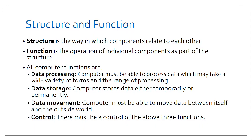All computer functions either perform data processing, control signals or instructions, help in data movement, or perform data storage functionality. A computer must be able to process data which may take a wide variety of forms. We have data storage which can be either permanent or temporary — talking about ROM and RAM. The computer must also be able to move data between itself and the outside world. That is the essence of input-output, and all of the above must have some kind of control mechanism.